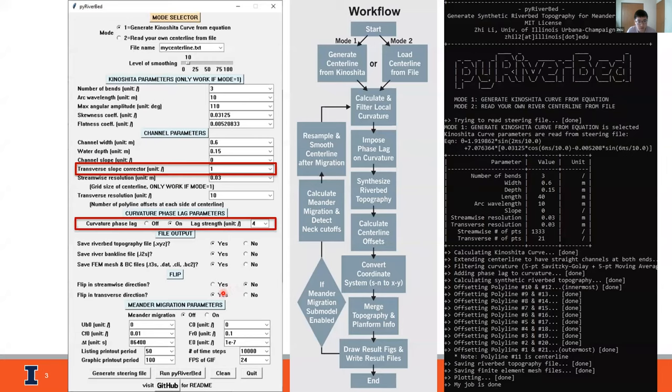Next, there are two things that need to be given: the transverse slope corrector and the curvature phase lag strength. These two things are new features proposed by this study, and I will discuss them later in this talk. Finally, the meandering migration submodel is embedded. If it is turned on, users need to enter meandering migration parameters just like other meandering migration models.